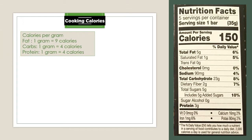Always remember that for every gram of the macronutrients — carbohydrates, proteins, and fats — they will provide these calories. For fat, 1 gram will provide 9 calories. Carbohydrates and proteins will provide 4 calories each.